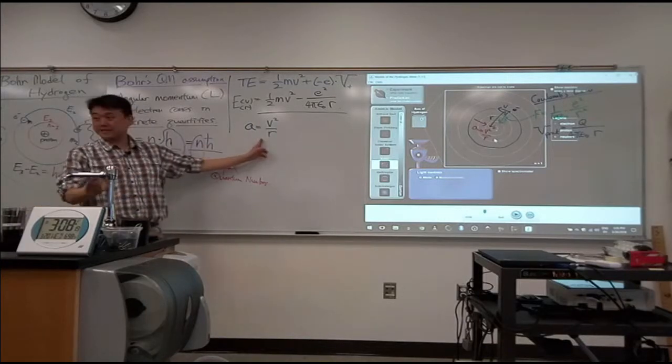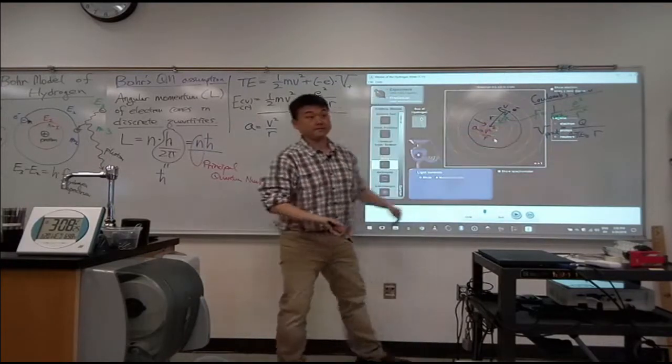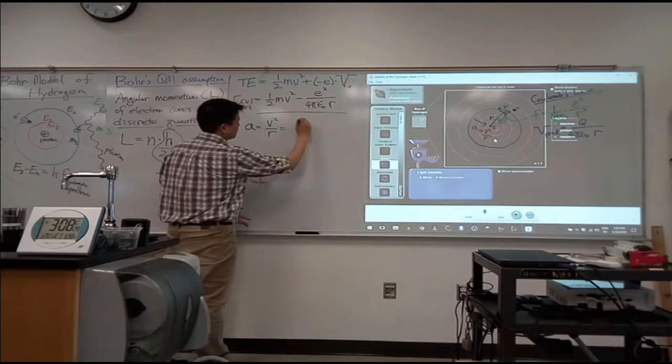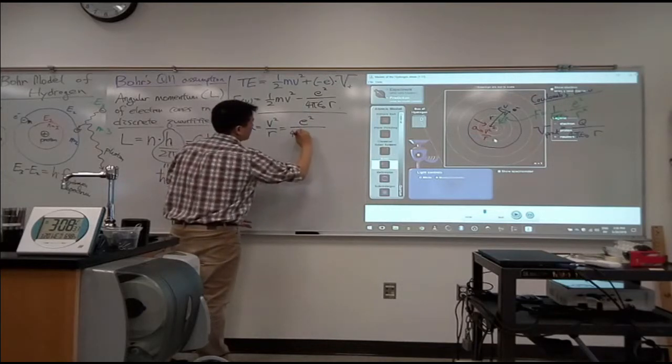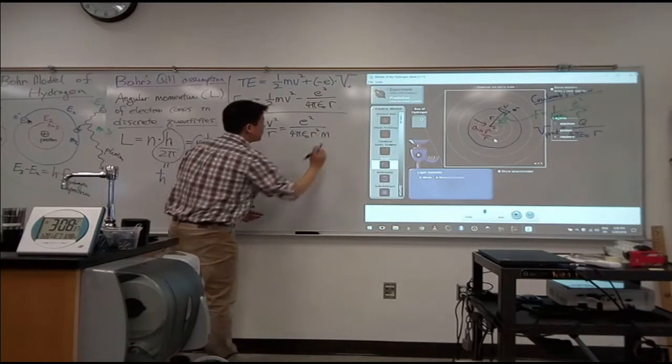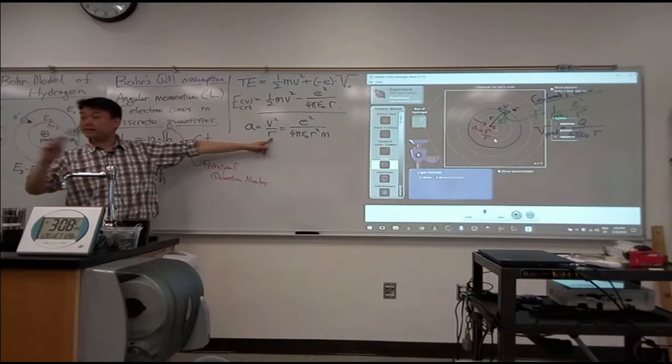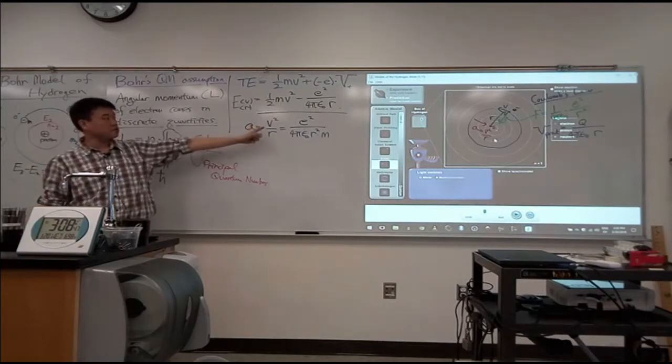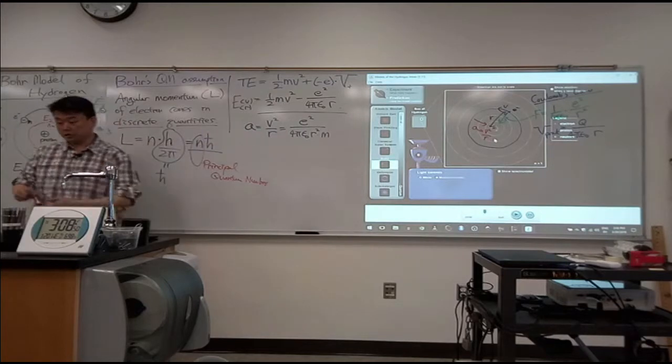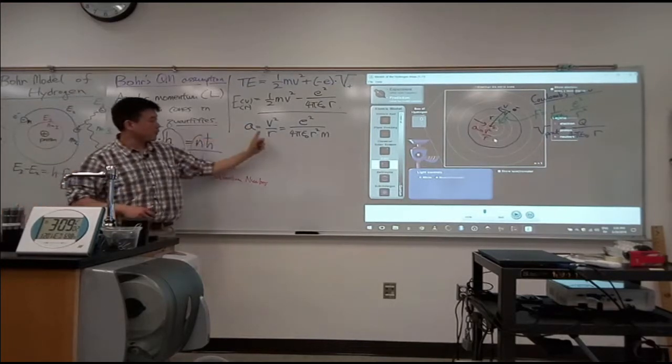We call that acceleration centripetal acceleration. And this is what you learned in physics 4a. It's the one formula I have people memorize. This centripetal acceleration is given by v squared over r. And the centripetal acceleration, it comes from centripetal force. But centripetal force is not a new kind of force. It's just a way of saying net force. This is your net force. This provides your centripetal acceleration.